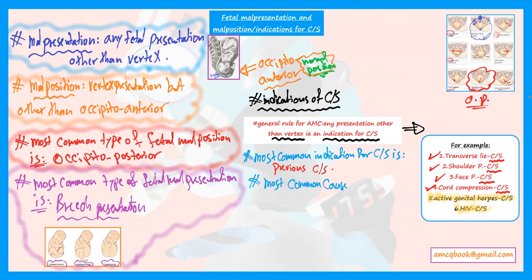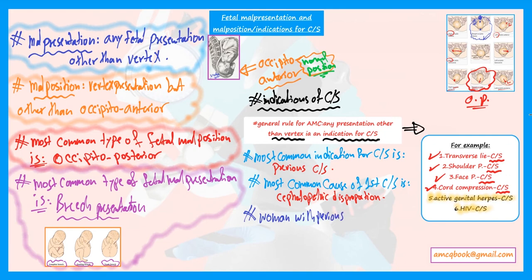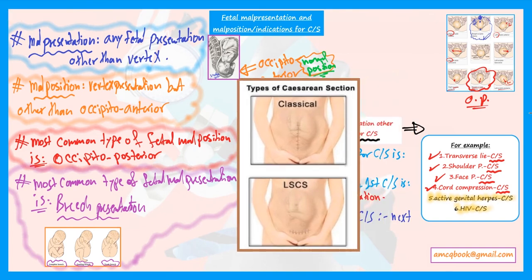The most common cause of a first caesarean section is cephalopelvic disproportion. For women with one previous caesarean section, the next step depends on the type. If the previous caesarean section was a classical one, then the next delivery must also be caesarean section — never attempt normal vaginal delivery. A classical caesarean section, even once, means all future deliveries are by caesarean section.